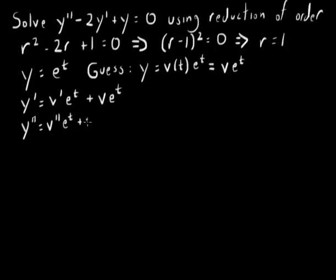So using the product rule in the first term, I get this. And then using the product rule in the second term, I get this, v double prime e to the t plus 2 v prime e to the t plus v e to the t.